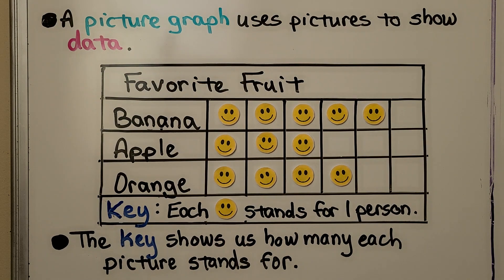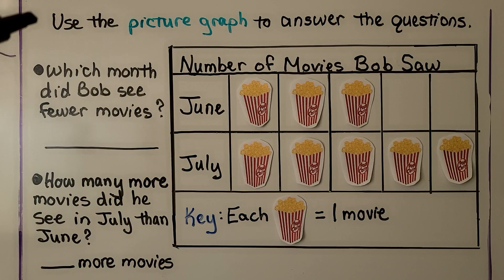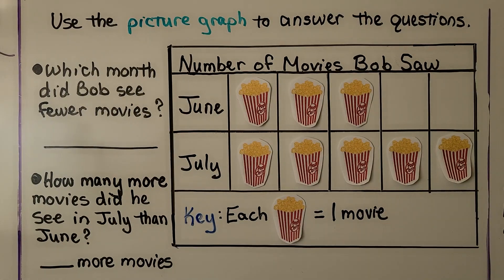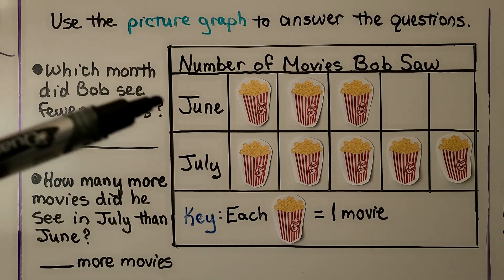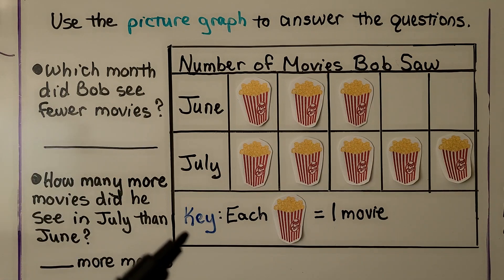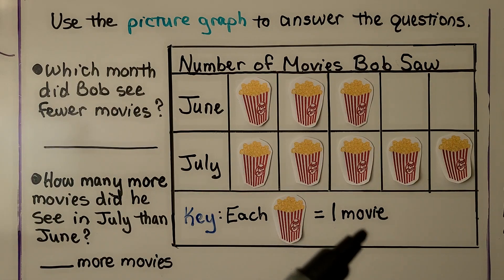A picture graph uses pictures. It's telling us to use the picture graph to answer the questions, so let's look at it first. The title is 'Number of Movies Bob Saw.' We can see it's June and July, and the key says that each box of popcorn equals one movie.